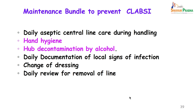Maintenance bundles to prevent CLABSI include: daily aseptic central line care during handling, which includes hand hygiene and hub decontamination by alcohol before introducing anything through the three-way; daily documentation of local signs of infection; change of dressing; daily review for removal of line; and if there are signs of infection the line should be removed and the catheter tip sent for culture.